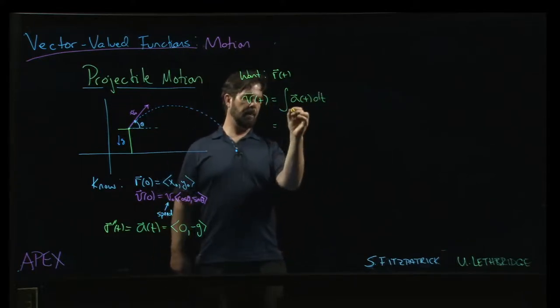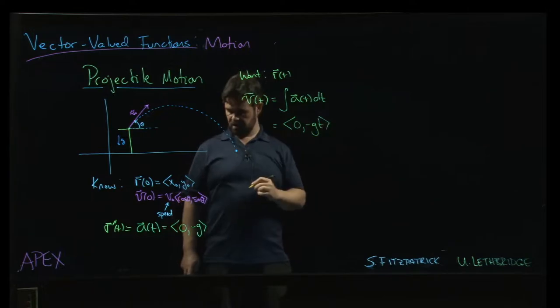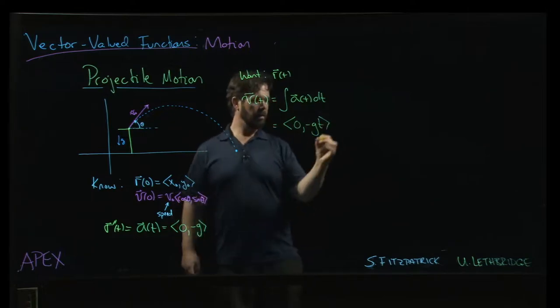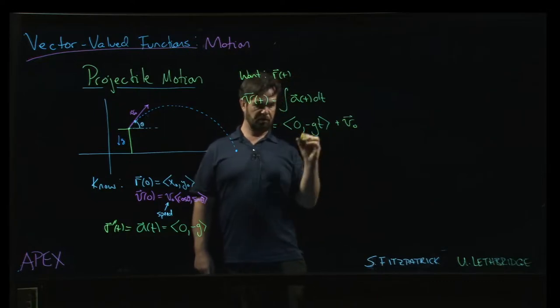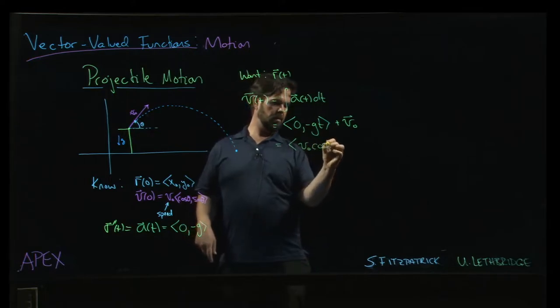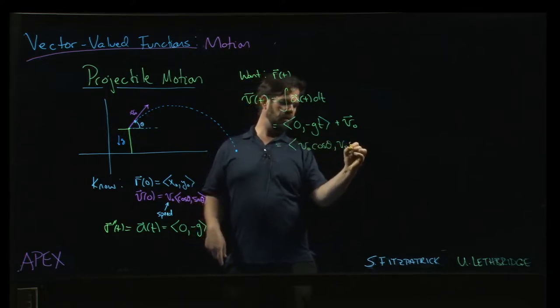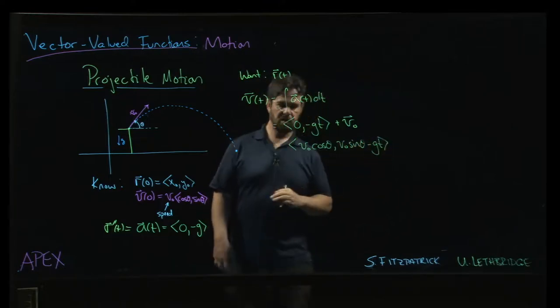That is going to be - taking anti-derivative here - 0 and minus g times t, plus your initial speed. So what that's going to look like is v naught cos theta and then v naught sin theta minus g times t.